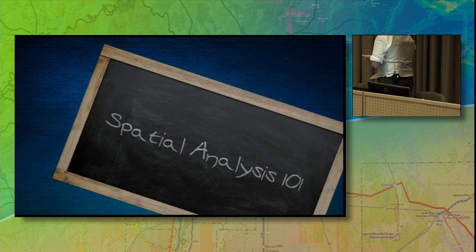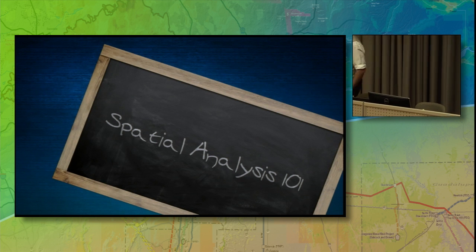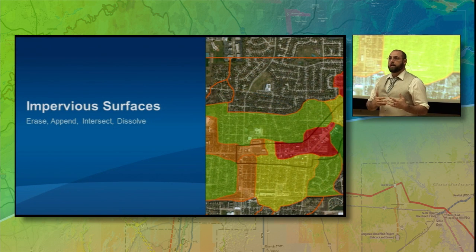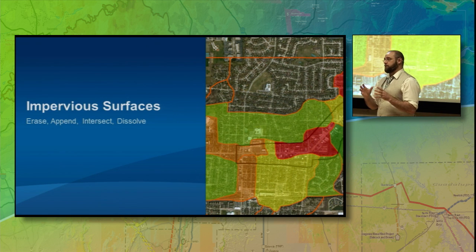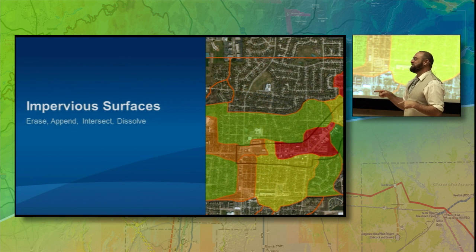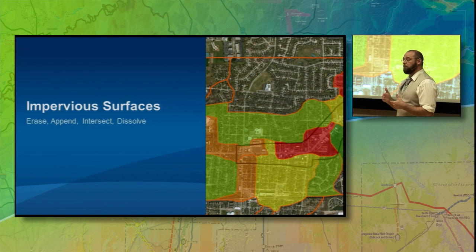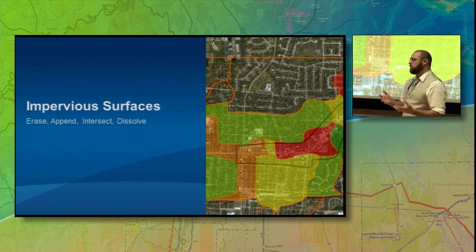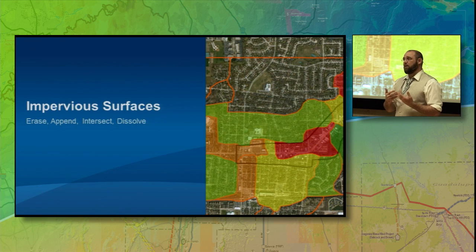I worked quite closely with the public works department in their storm drain system. One time I was asked to make a map that included storm drains, project areas, and drainage areas — and I did that. What I found out later, after I talked to the people, was that they were using that map to make a decision. They were trying to figure out where to place BMPs, or best management practices — things like filters inside storm drains or grassy swells to allow runoff to go there instead of the creeks, to reduce pollution. Instead of asking them a question, I gave them a map, and I could have helped them make a better decision.